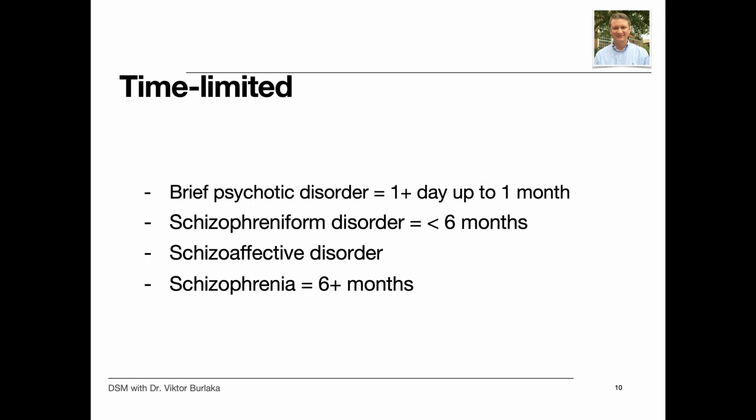Schizoaffective disorder is a combination of the positive, negative, and disorganized symptoms of schizophrenia, along with the presence of intermittent major depressive episodes, manic mood episodes, or both. Schizophrenia lasts for at least six months and includes at least one month of active phase symptoms. In schizoaffective disorder, a mood episode and the active phase symptoms of schizophrenia occur together and were preceded or are followed by at least two weeks of delusions or hallucinations without prominent mood symptoms.